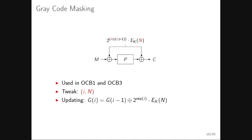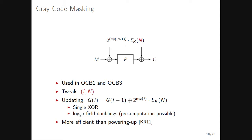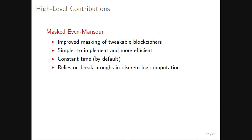A third approach is gray code masking, used in OCB1 and OCB3. Updating the mask requires only a single XOR with pre-computation done beforehand; without pre-computation, up to log_2(i) field doublings are needed, which can introduce timing leaks. As Rogaway and Krovetz showed in 2011, this is more efficient than powering-up masking, which is why it's used in the latest OCB variant.